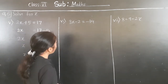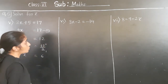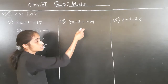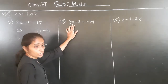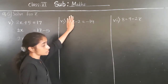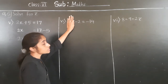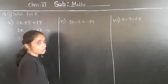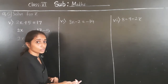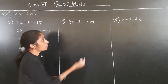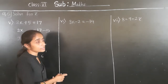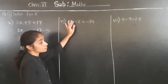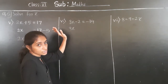Now let's solve: 3x minus 2 is equal to minus 14. Now 3 is with the variable — so don't touch that number first. Which number is alone? 2 is alone. So let's transfer 2 to the right hand side. Let 3x stay as it is.